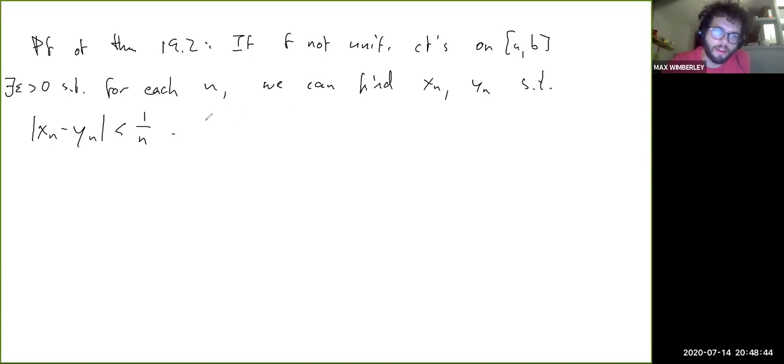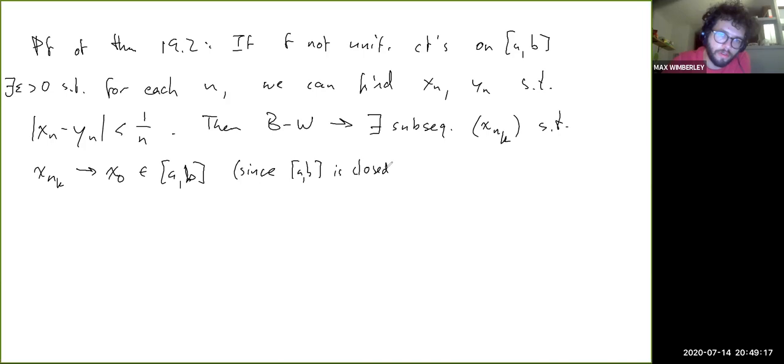For each n, we can find xn and yn such that xn minus yn absolute value is less than 1 over n. Then Bolzano-Weierstrass tells us that there exists a subsequence x_nk such that x_nk converges to some x0 in AB. Why is it in AB? That's because AB is closed.